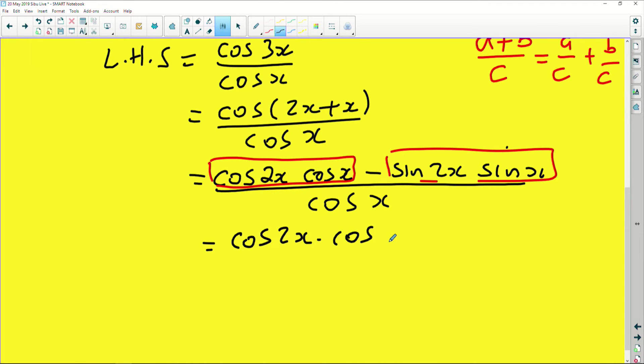So I'll say okay, this is cos 2x multiplied by cos x divided by cos x, minus sine 2x sine of x divided by the cos of 2x.